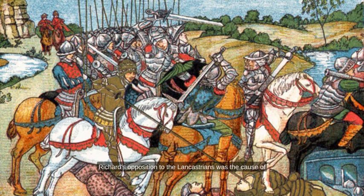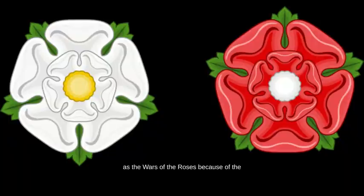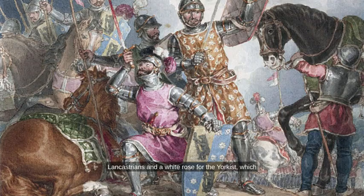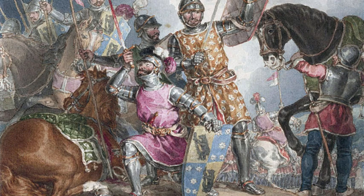Richard's opposition to the Lancastrians was the cause of the famous civil wars between the two houses, known as the War of the Roses, because of the emblem of each house — a red rose for the Lancastrians and a white rose for the Yorkists — which continued periodically through a series of fierce, bloody battles for the next 30 years.